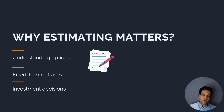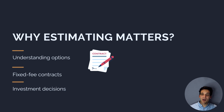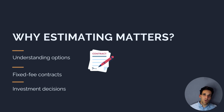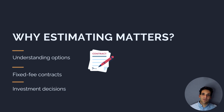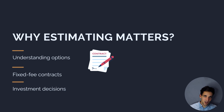Estimating also matters for several other reasons on construction projects. The first is it helps us understand different options. Say we're managing the design of a project and we have to decide between installing multiple distribution boards on street lighting or installing one distribution board. The central question is which option is cheaper. The only way we can know the answer is to estimate the costs.